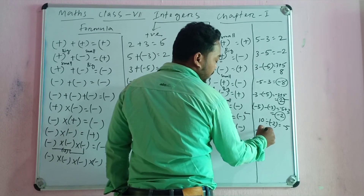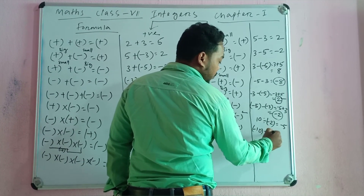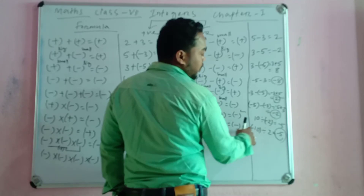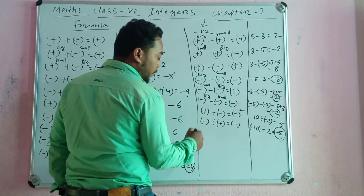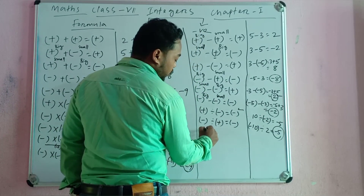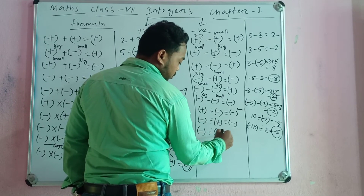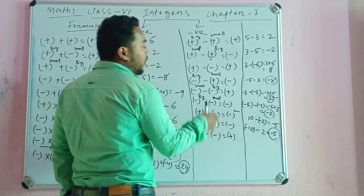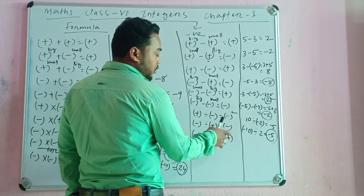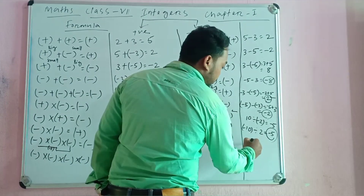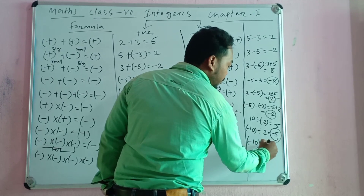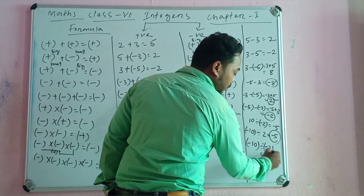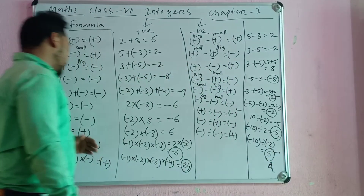If we have minus 10 divided by plus 10, then what? Minus 5. When we divide by minus, we have a negative answer. Minus divided by minus — what will happen? It will always be positive. Because when we divide minus by minus, we will always get positive. Suppose minus 10 divided by minus 2 — it will always be positive. That will always be positive. Thank you.